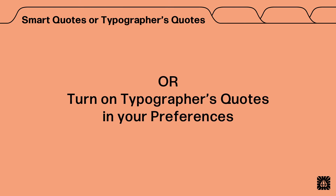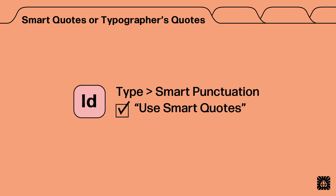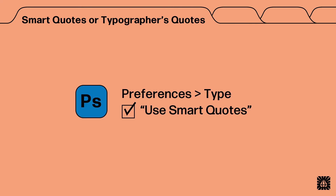Or, just turn on your typographer's quotes in your preferences. In Illustrator, go to Preferences, Type, and then check Use Typographer's Quotes. In InDesign, go to Type, Smart Punctuation, and then check Use Smart Quotes. In Photoshop, go to Preferences, Type, and then check Use Smart Quotes.